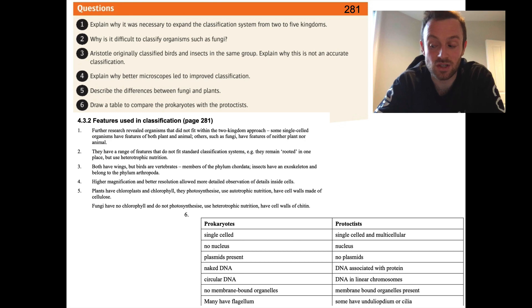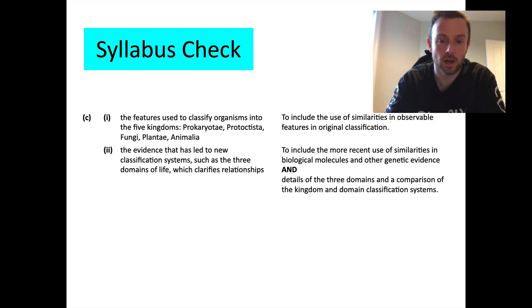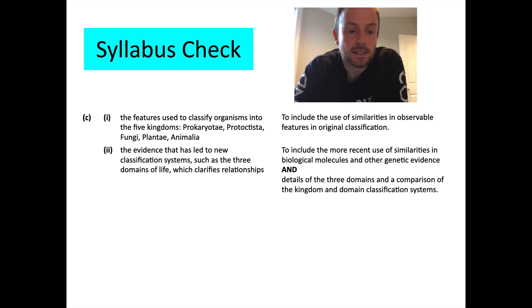Okay. Thanks very much. That was the lesson on features used in classification. And before we go, we'll just have a quick look at the syllabus to check we understand what we should. So, can you do these things? Can you understand or describe the features used to classify the organisms into those five kingdoms to include the use of similarities and features and differences? And can you also talk about the evidence that has led to the new classification systems, such as the three domains of life, which clarifies the relationships? So, we're going to be looking a little bit more about this next lesson. We're going to be looking at the genetic evidence and how that's decided or determined the way we classify things and how phylogenetic evidence has contributed to that. Okay. So, that's next lesson. All right. Thanks very much. Bye-bye.